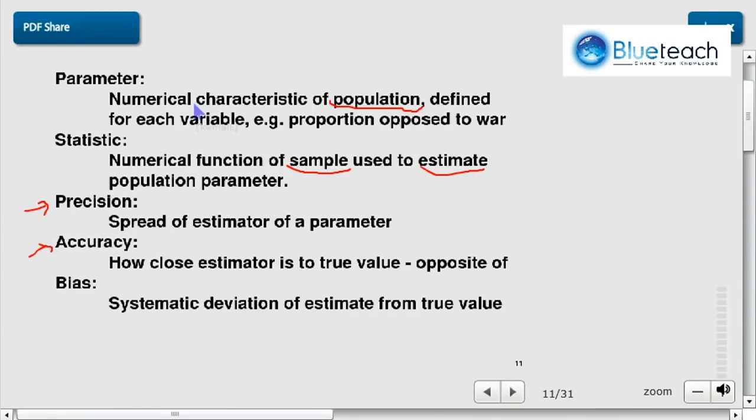So the parameter is what we're trying to estimate on the population, because we're not interested in every single age of every person in the population. We want to know the average. A statistic is what we actually use to estimate, using the data from the sample. And precision and accuracy is the way we measure the error that we're doing by using the statistics.